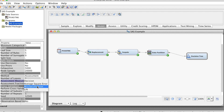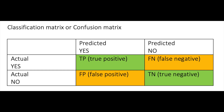If the target variable is categorical, the misclassification rate will be used along with the classification matrix, also called confusion matrix. Confusion matrix is a table that summarizes the performance of a classification algorithm. It presents all results of the prediction, including correct and incorrect predictions — specifically the number of true positives (TP), true negatives (TN), false positives (FP), and false negatives (FN).